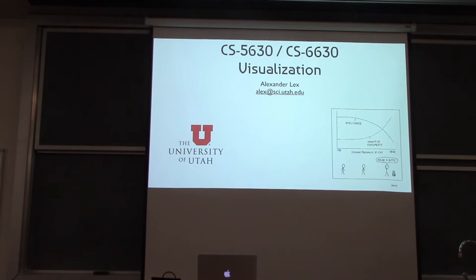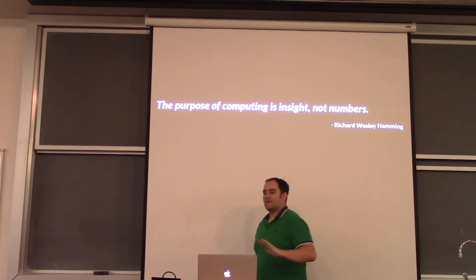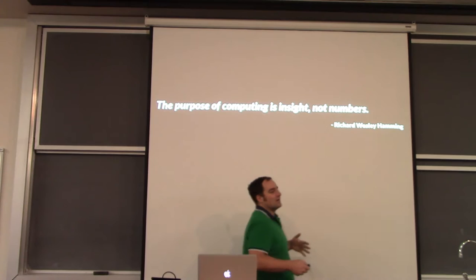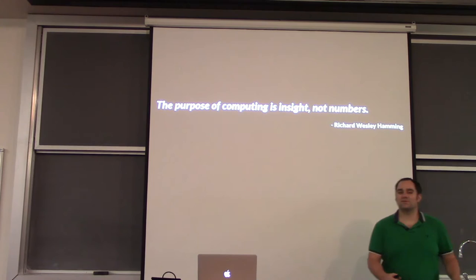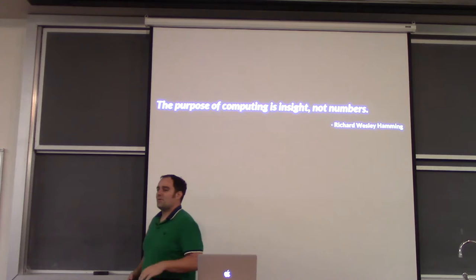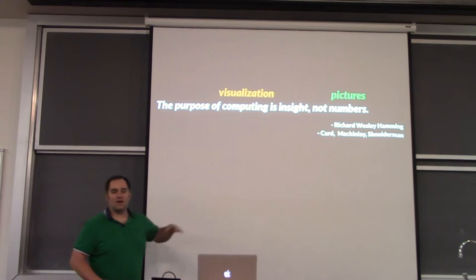Everybody here is probably somehow related to computer science or computing, so I like to start my talks with this quote: 'The purpose of computing is insight, not numbers.' If we run an algorithm to calculate something, we don't want to get numbers — we want something actionable, some result. Richard Hamming is one of the famous computer scientists. Modifying this quote slightly: 'The purpose of visualization is insight, not pictures.'